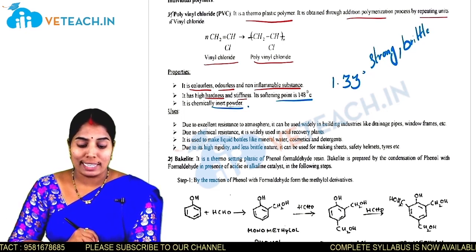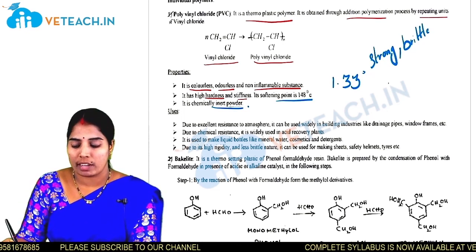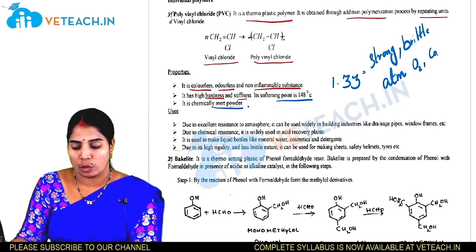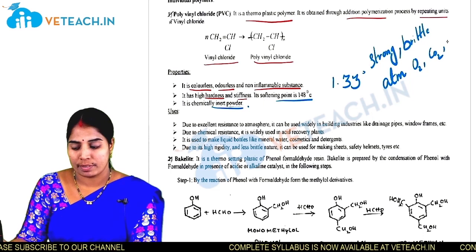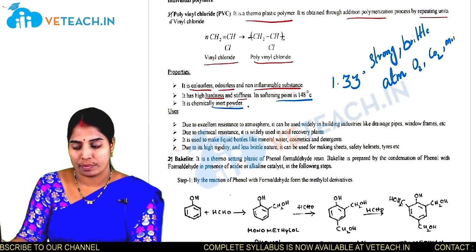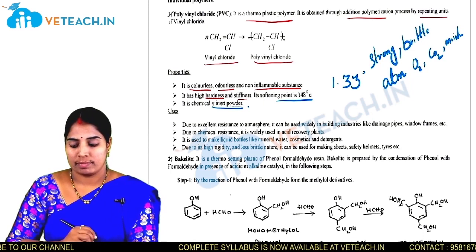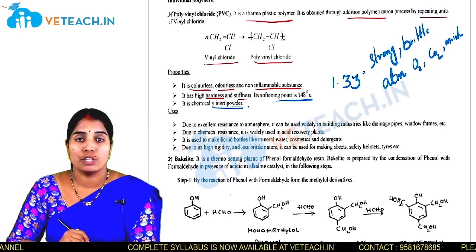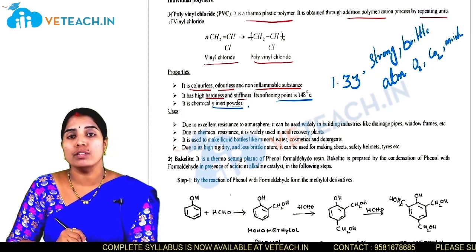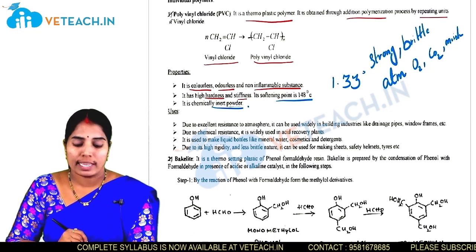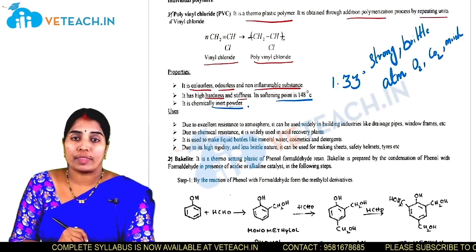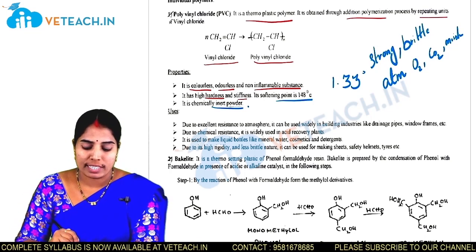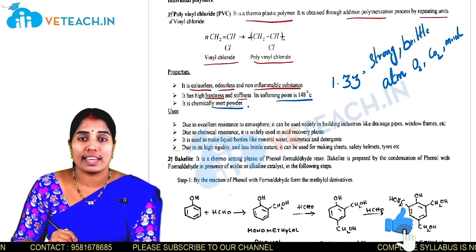PVC is resistant to atmospheric conditions such as O2, CO2, and moisture. However, it is not stable to heat and UV radiation and undergoes degradation under those conditions. Now let us see the applications of PVC.